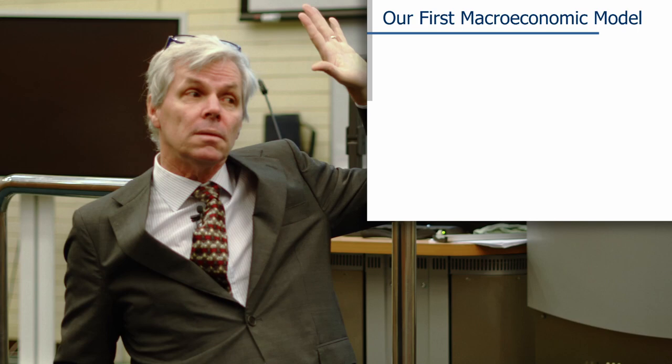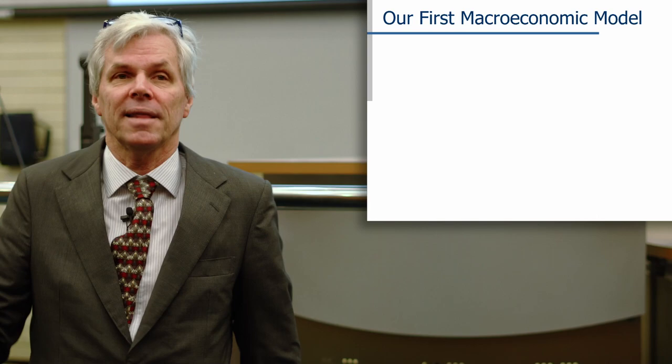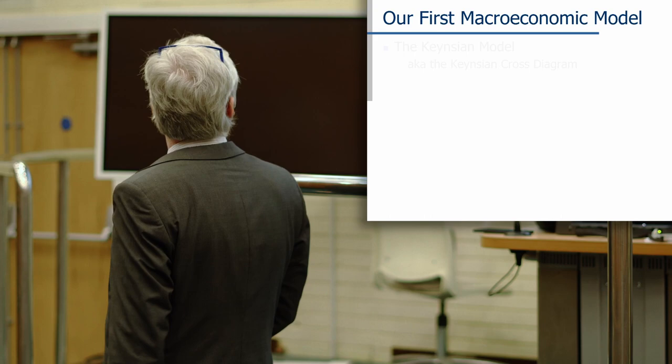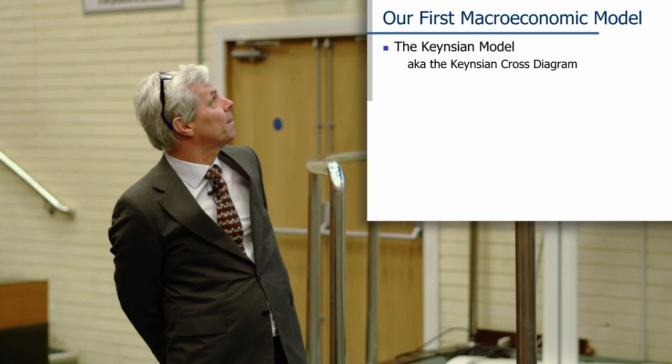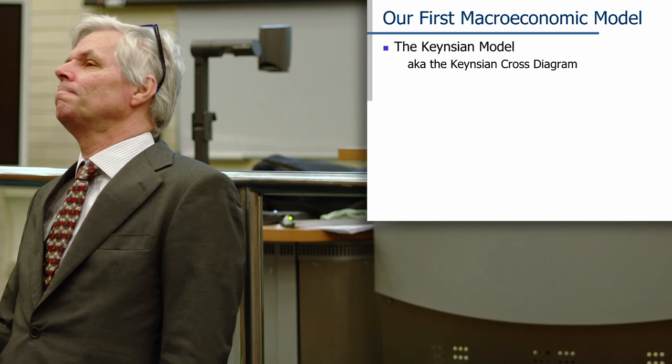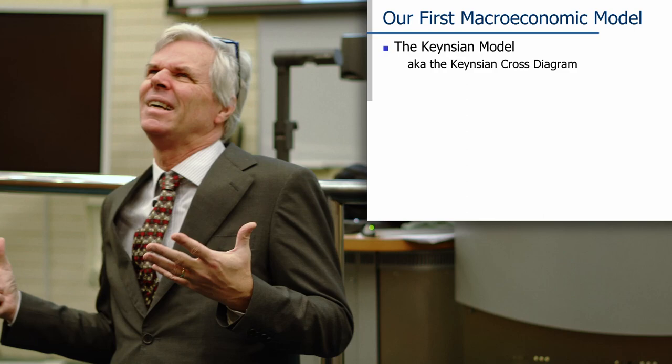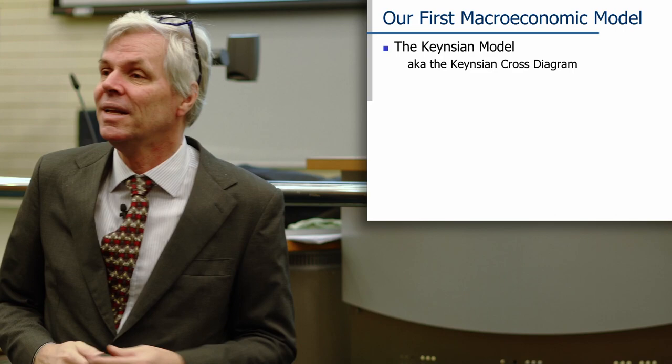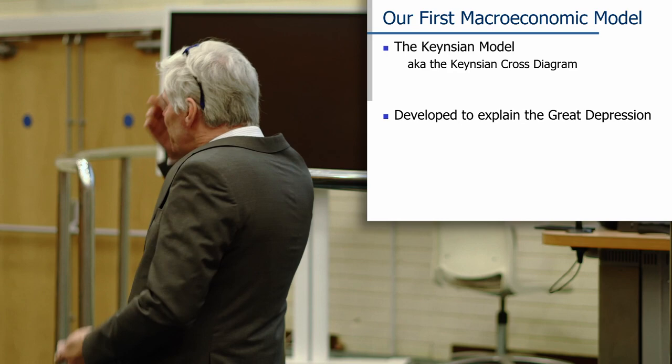This is the general approach — normally we don't make them quite this simple, but the general approach is: simplify it as much as you possibly can, understand that bit, and then add on. Our first macroeconomic model is the Keynesian model, also known as the Keynesian cross diagram — I put the AKA there so that if you have a different book, you can find it. It is there in any introductory macroeconomics book. It is core for macroeconomics, a foundation that lots of stuff is built on. If you don't understand this, you're not a macroeconomist.